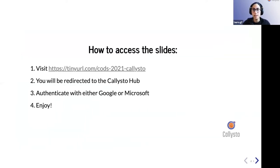If you'd like to access the slides, you can visit tinyurl.com/CODS-2021-Callisto. When you press this link, you'll be redirected to the Callisto Hub, which is a service provided by our program that allows you to interact with Jupyter Notebooks and the Python programming language. All you need to do is authenticate with either Google or Microsoft and enjoy the slideshow.